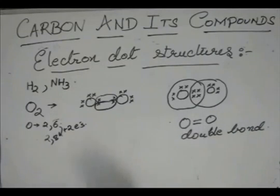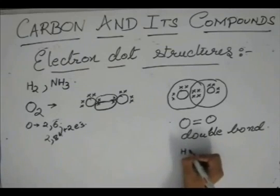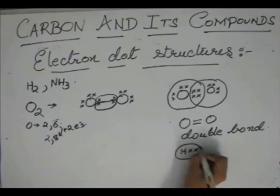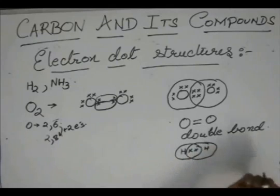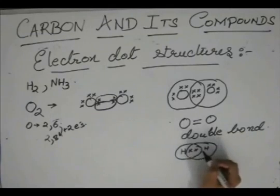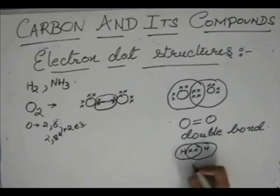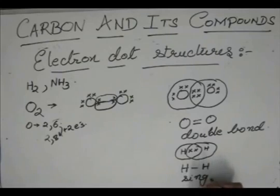So, in hydrogen, there was sharing of only one electron. So, a total of two electrons were shared. So, this was a single bond.